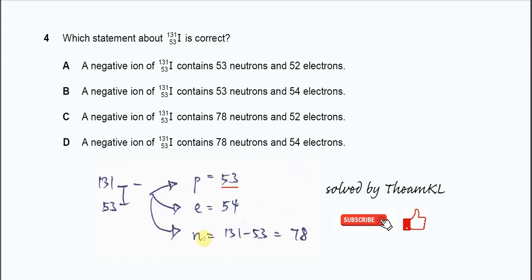We need to get the neutron number from the mass number or nucleon number. So we use 131 minus the proton number, so we get 78. So the proton number is 53 and the neutron number is 78.